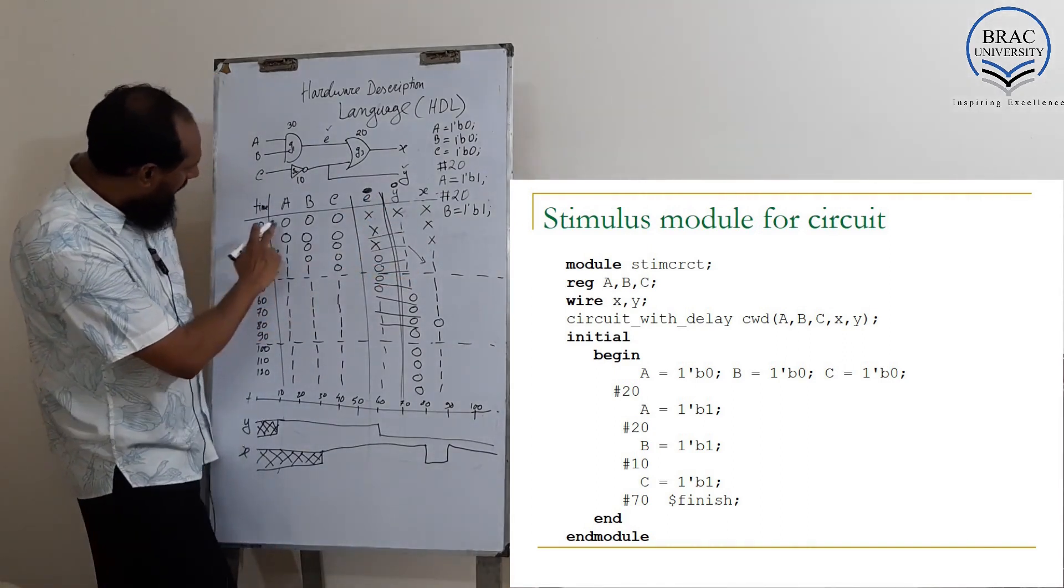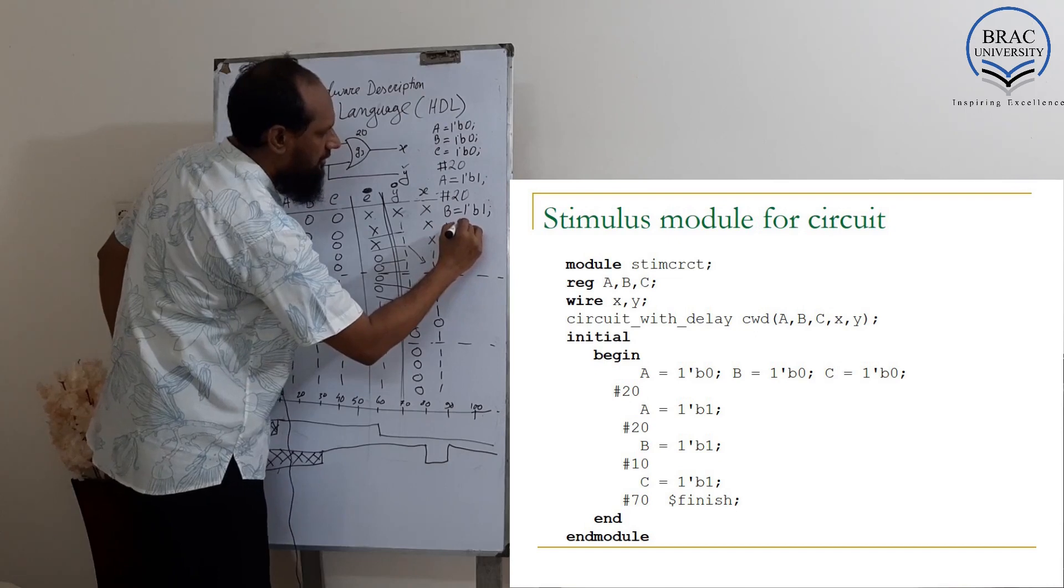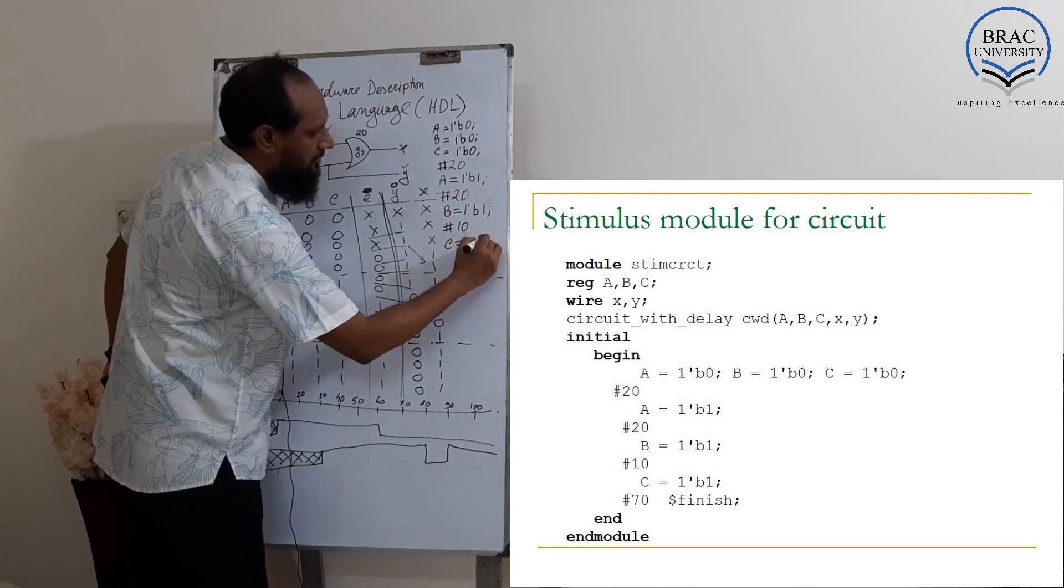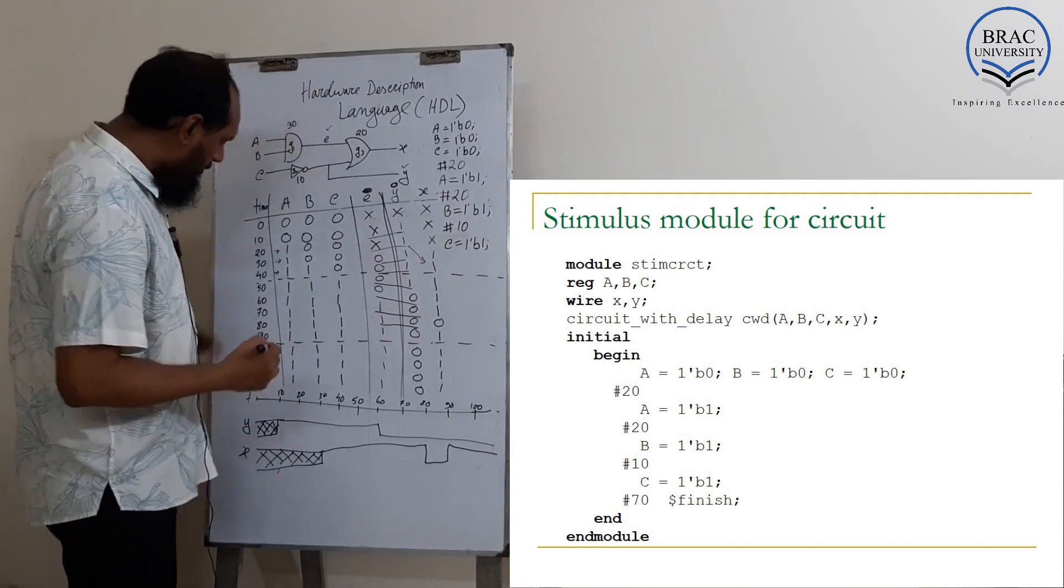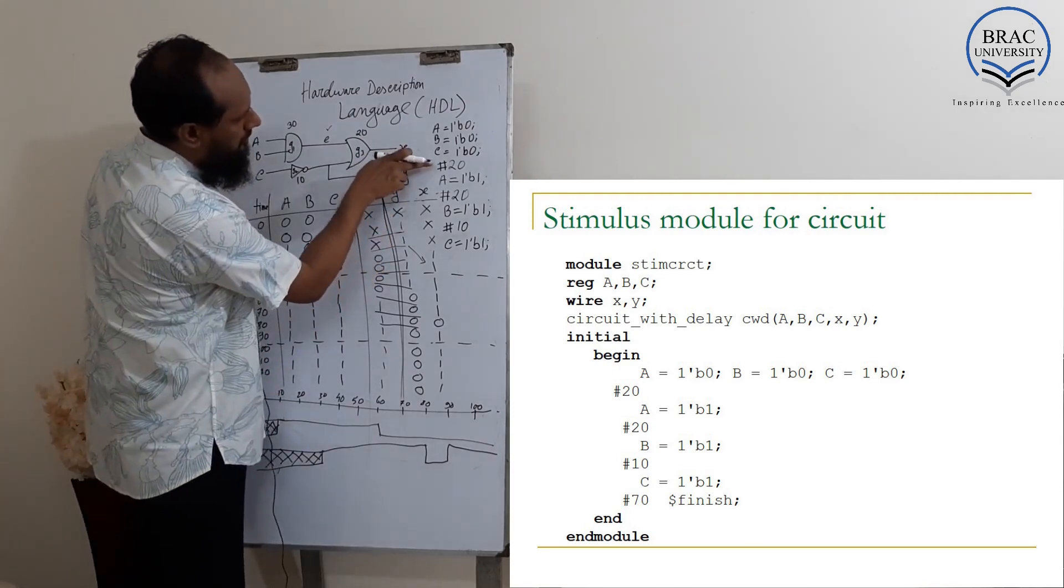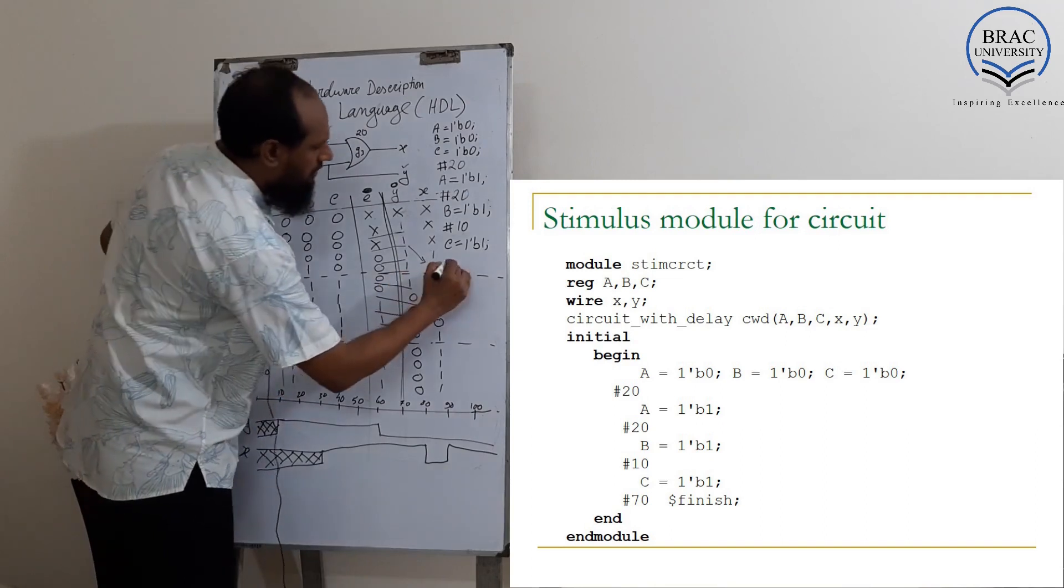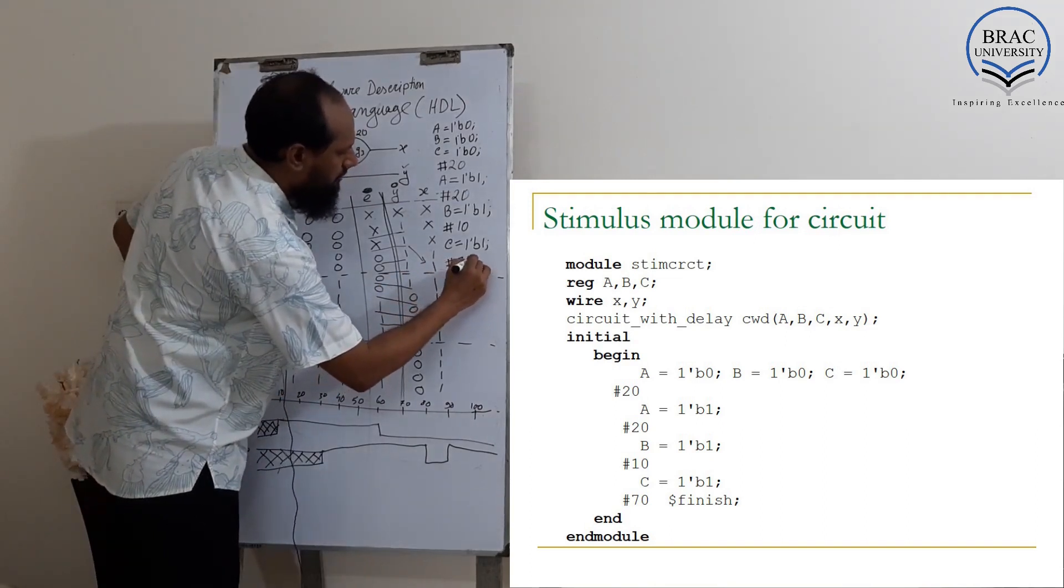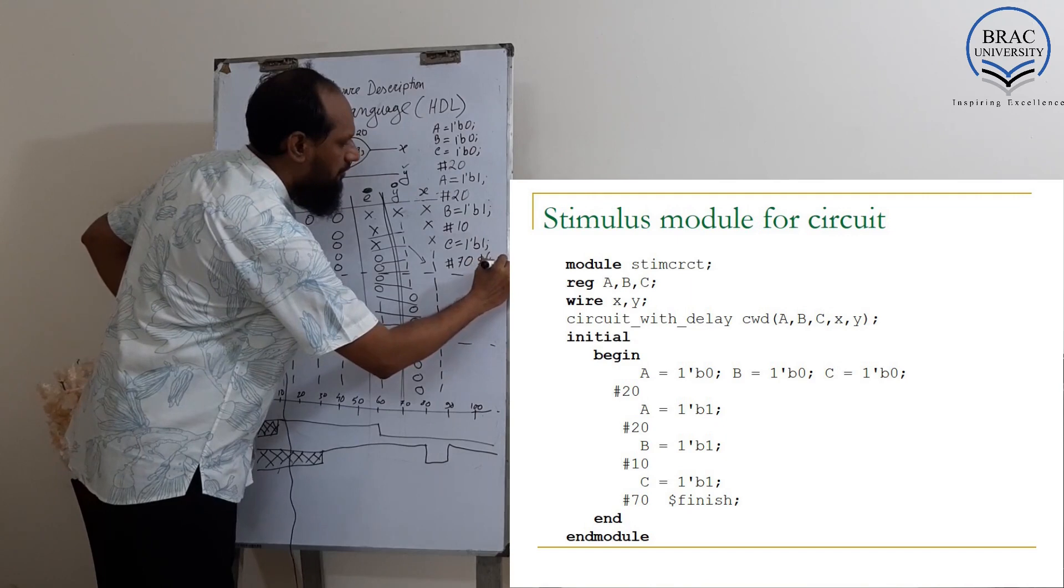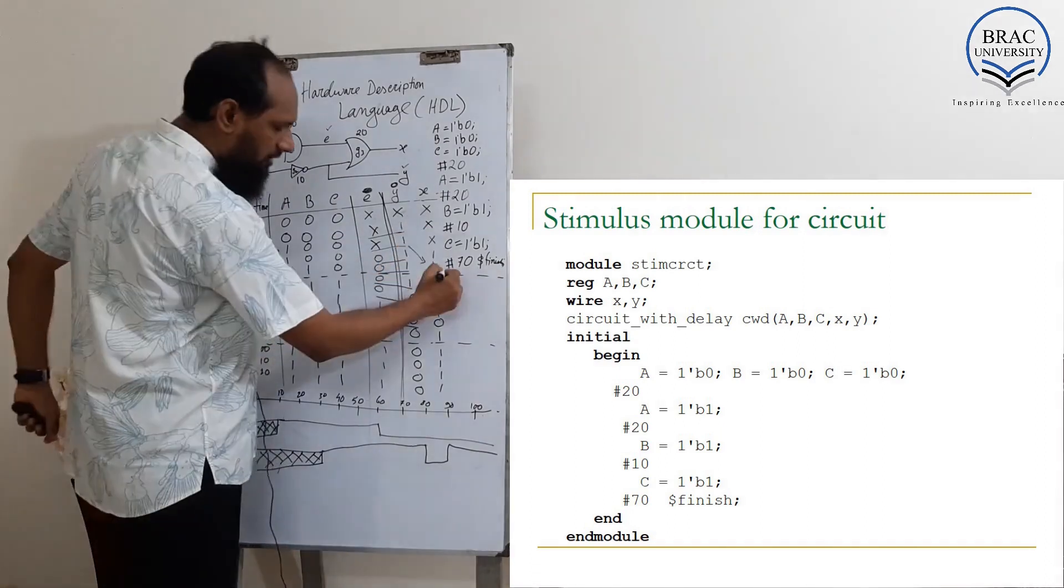Then we change the value of C at 50 nanoseconds. So here the delay was hash just 10, then C equal to 1 bit 1. And we continued it until what time? 120 nanoseconds. We used 20, 20, 10 - that means 50 nanoseconds. We still continued till 120, so we still have 70 nanoseconds to run this program. Then we finish with a dollar sign and finish keyword followed by semicolon, then end, then end module.